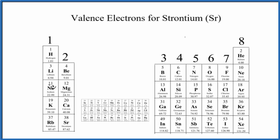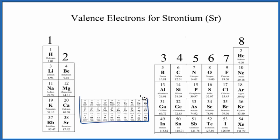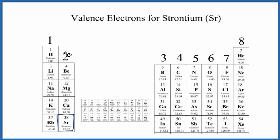Group 1 — all of these elements have one valence electron. Group 2 — they all have two valence electrons. We skip the transition metals here. Groups 13 through 18 have 3 through 8 valence electrons. So this trend is really helpful because we just find strontium right here — it's in Group 2. Strontium has two valence electrons.